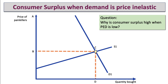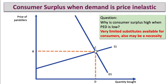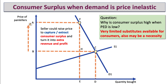So why is consumer surplus high when price elasticity of demand is low? Well, typically it's because there are very few substitutes available for the consumer. The cost of switching may be expensive as well, and it might also be regarded as a necessity — in other words, you're willing to pay the price because you need the product, particularly for example if you're in pain and need to buy painkillers. As a result, when price elasticity of demand is low, the consumer surplus area is high, and what the seller could do is raise the price to capture and extract that consumer surplus and turn it into extra sales revenue and potentially extra profit.